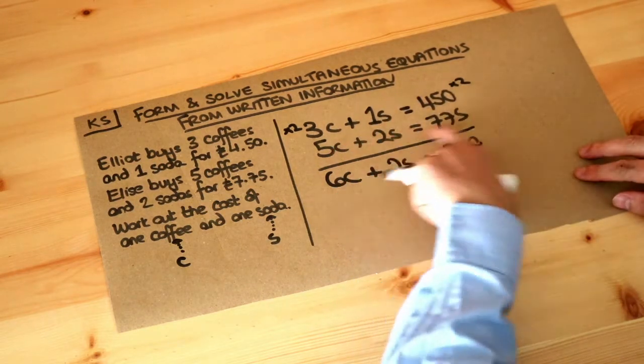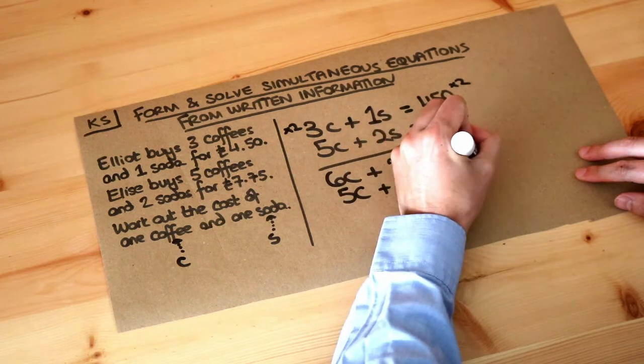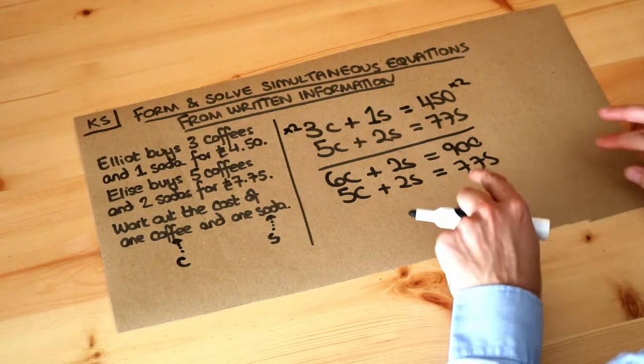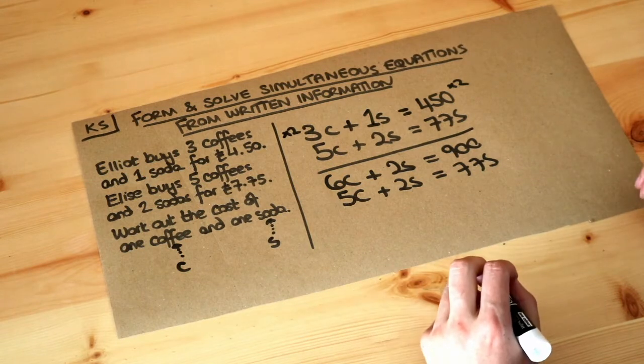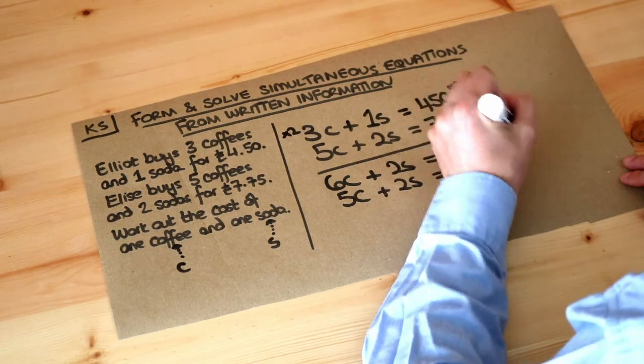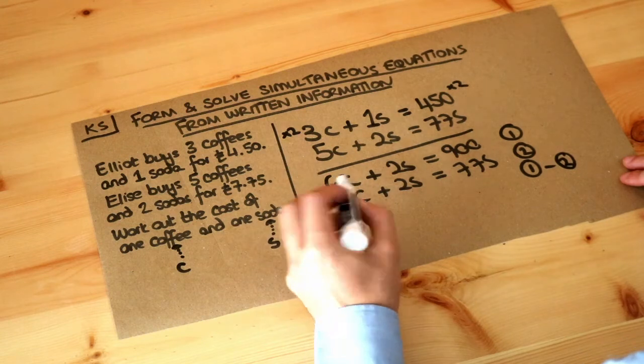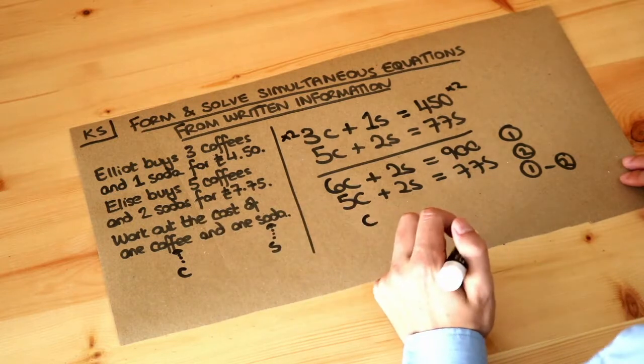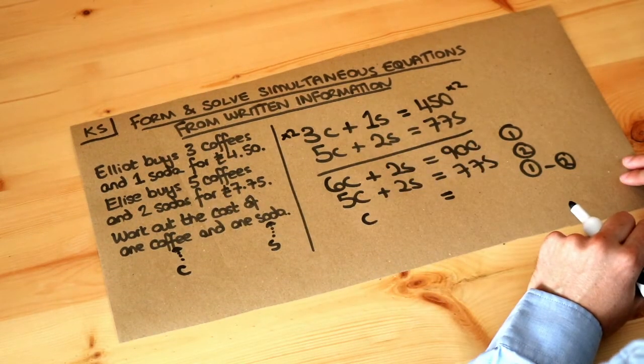I'll copy the second equation for convenience. Do we add or subtract the equations? If we added them, I'd get 4s, which doesn't cancel. So we subtract. I'll do equation 1 minus equation 2. 6c minus 5c is c. 2s minus 2s is 0. And 900 minus 775 is 125.